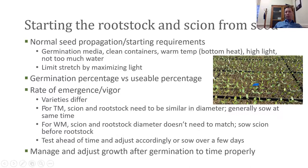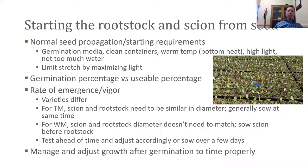When it comes to rootstock and scion, there are differences between varieties. For tomatoes, the scion and rootstock need to be similar in diameter for grafting — this is important. Generally you would sow those at the same time, though I'm flagging this as personal preference. You can read all kinds of things on the internet about sowing rootstock a week before or a week later — the point is that the scion and rootstock stem or hypocotyl diameter need to be as close as possible to each other when grafting. So this is where testing seeds ahead of time is helpful — see how they germinate, how that germination spreads out, and which are more vigorous.